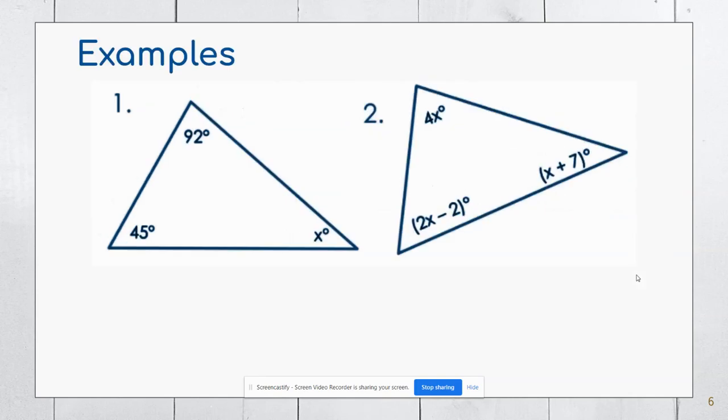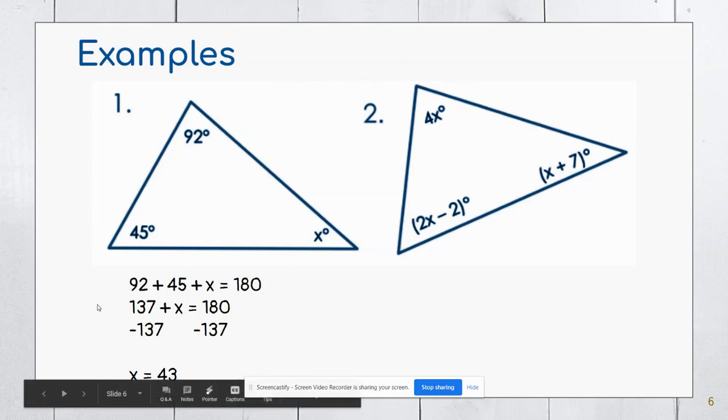Here are two examples. For the first example, I'm going to add all three of those up and set them equal to 180, and then I'm going to start combining like terms. So 92 and 45 make 137, and then subtracting 137 from both sides, I get that angle X has to be 43 degrees.